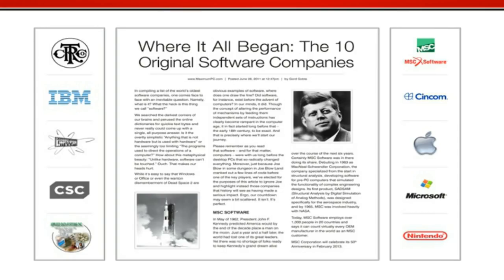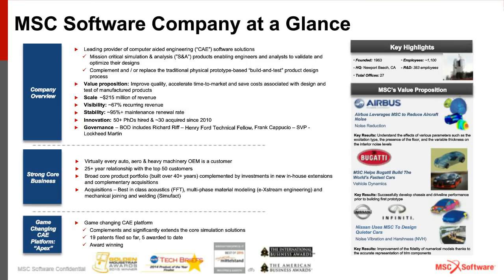The company at a glance — here we are 54, 55 years later. We're worldwide with over 1,200 employees. I want you to be able to download this presentation in PDF format and go over it at your leisure. The key takeaway is that second bullet under 'strong core business': a 25-plus year relationship with the top 50 customers. That means companies like Nissan, GM, Ford, Dell, Sony, Boeing, and NASA do not treat MSC Software as a vendor — they treat MSC Software as a partner.